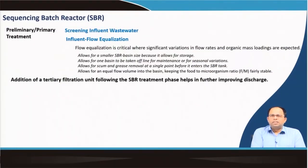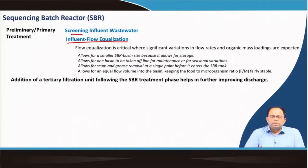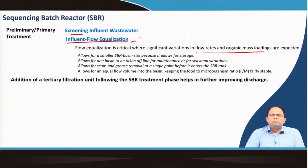When operating a sequencing batch reactor, we also need to do some preliminary or primary treatment. We screen the influent wastewater so that plastics or other floating matter do not enter the SBR chamber, and we also need flow equalization. SBRs cannot handle too much load or too much varying flow, so a flow equalization tank is critical. The total organic loading has to be within a certain value, making flow equalization a mandatory process before the SBR.